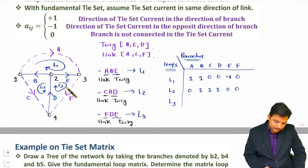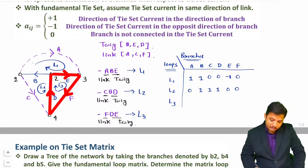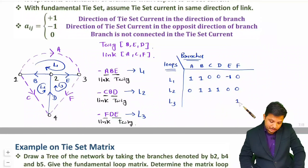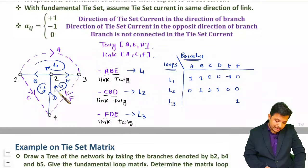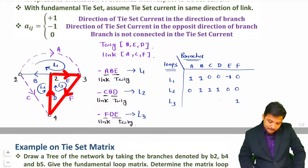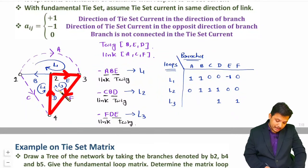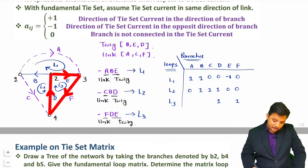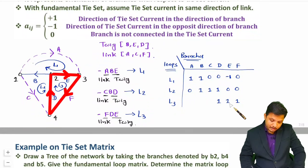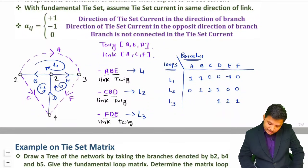For loop L3: it is in the direction of F, so F gets plus 1. D is in the direction of L3 so D gets plus 1. E is also in the direction of L3 so E gets plus 1. Branches A, B, and C are not connected with L3, so those are 0.